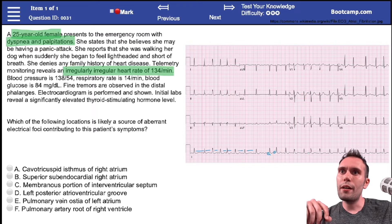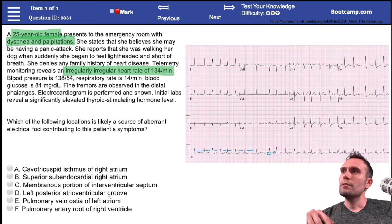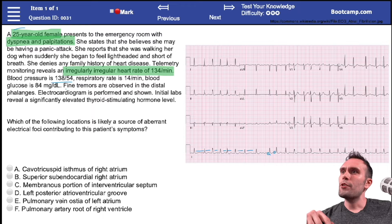We can also see blood pressure is modestly elevated, especially for a 25-year-old. She has fine tremors and the EKG is shown.